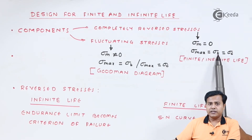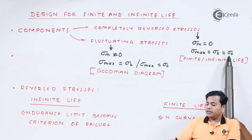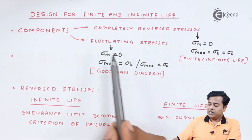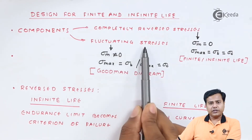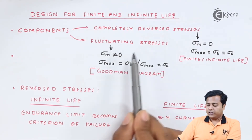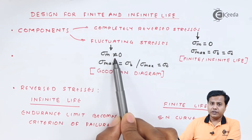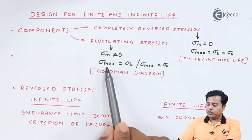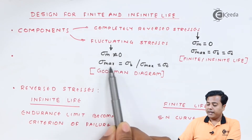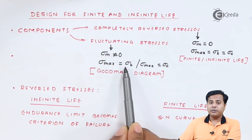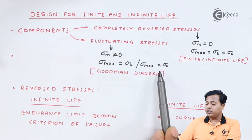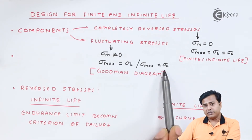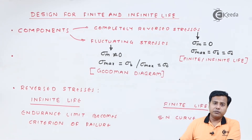In one cycle it will be tensile and in another it will be compressive. In case of fluctuating stresses, the mean stress is never equal to zero. Also, the maximum stress will be purely tensile, purely compressive, or a combination, but not equal halves.